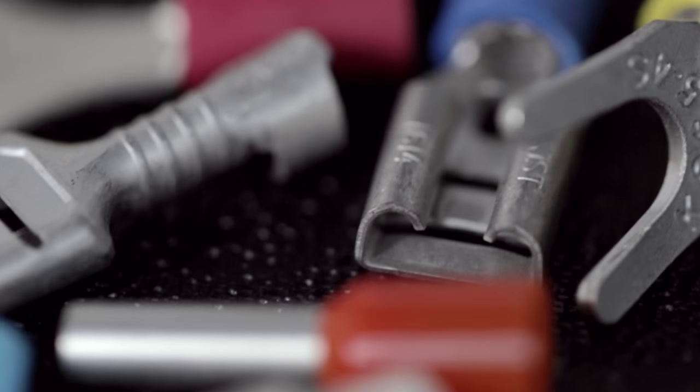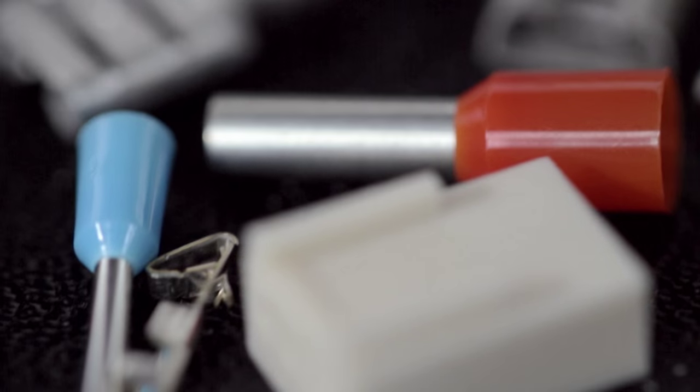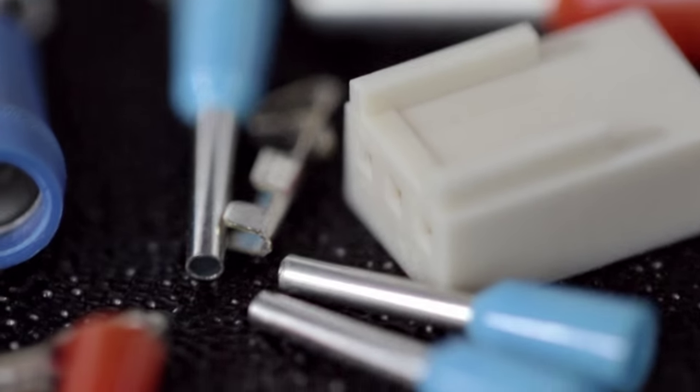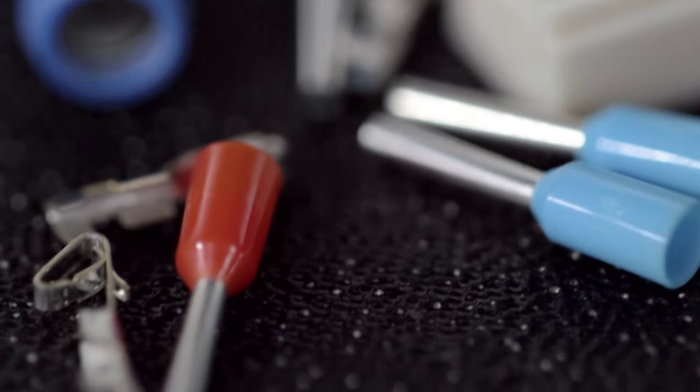This creates a problem since mechanical connectors need a solid wire end to grip effectively. To provide a solid end when using multi-strand wire, a boot lace crimp is attached.